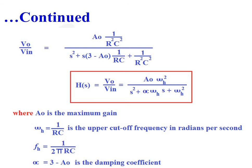If σ = 1.414, that corresponds to a Butterworth filter. For a Butterworth filter, A0 = 1.586, as in the case of a second order high pass filter.